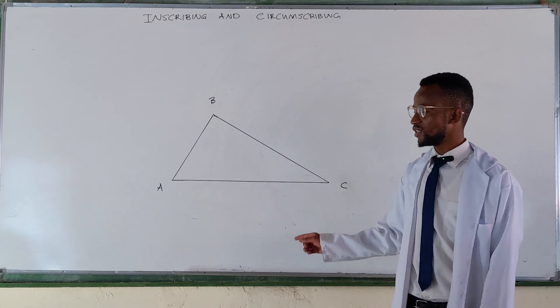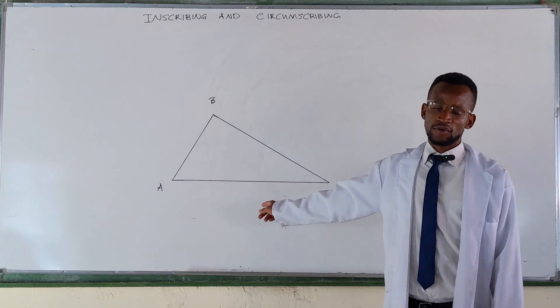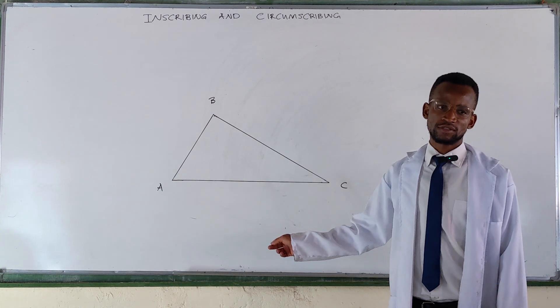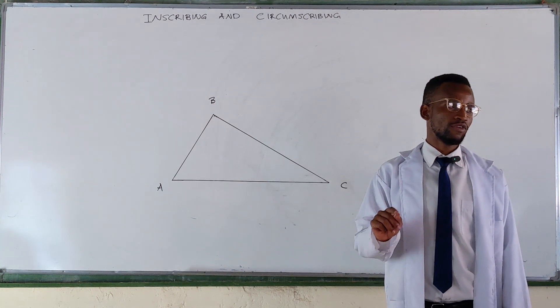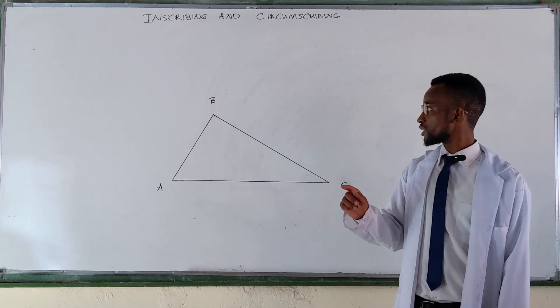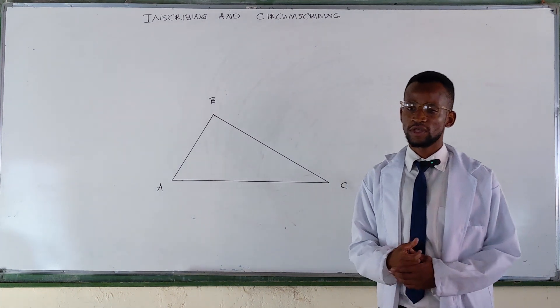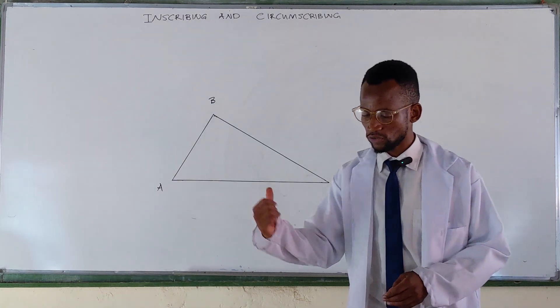After finding a circumcenter, we open our compass to any of the three corners. Because a circumscribed circle should pass through any of the three corners, or all the three corners of the given polygon, or triangle in this case.